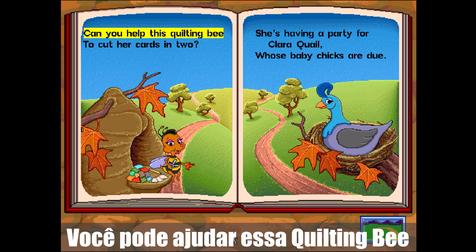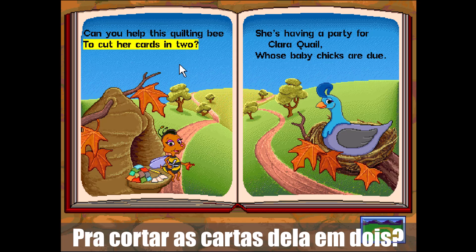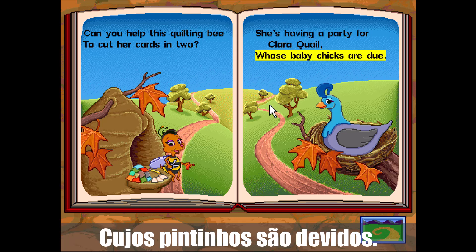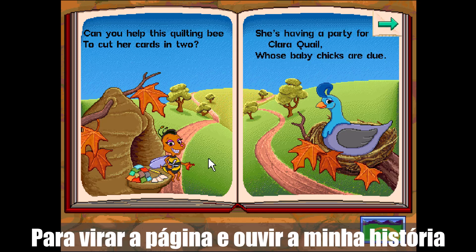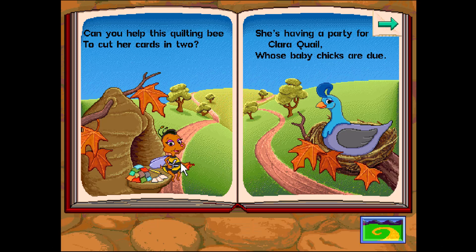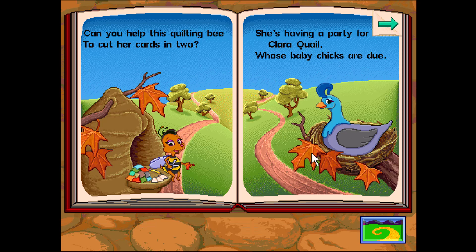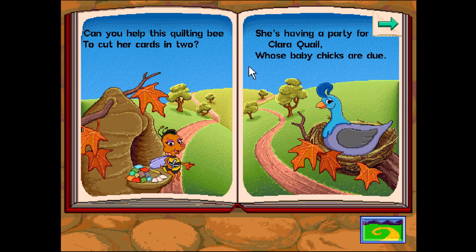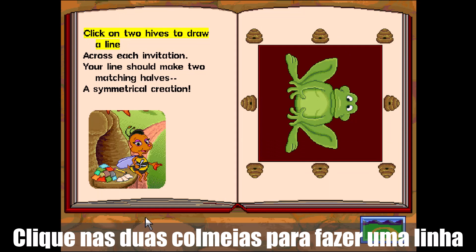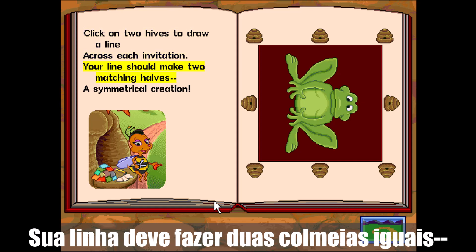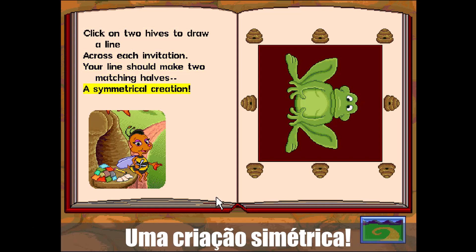Can you help this quilting bee to cut her cards in two? She's having a party for Clara Quail, whose baby chicks are due. To turn the page and hear my story, click on the page turn arrow. Click on two hives to draw a line across each invitation. Your line should make two matching halves — a symmetrical creation.